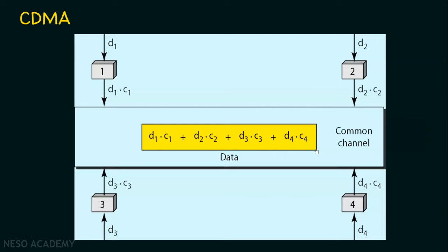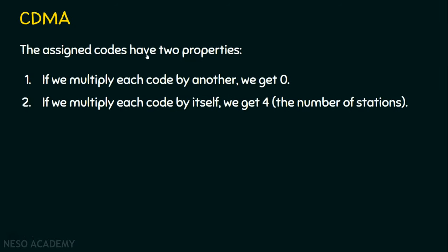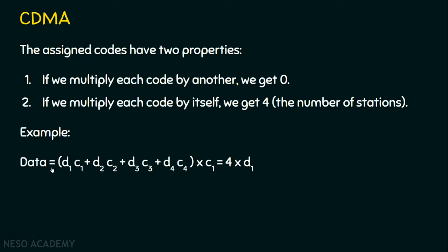The receiver uses the code to retrieve its data. These codes are based on coding theory. The assigned codes have two important properties: first, if we multiply each code by another code, we get zero; second, if we multiply each code by itself, we get four — where four is the number of stations in this example. For instance, D1C1 + D2C2 + D3C3 + D4C4, when multiplied by code C1 (the code of Station 1), gives us the original data D1, along with the number four, which represents the number of stations involved in the transmission.